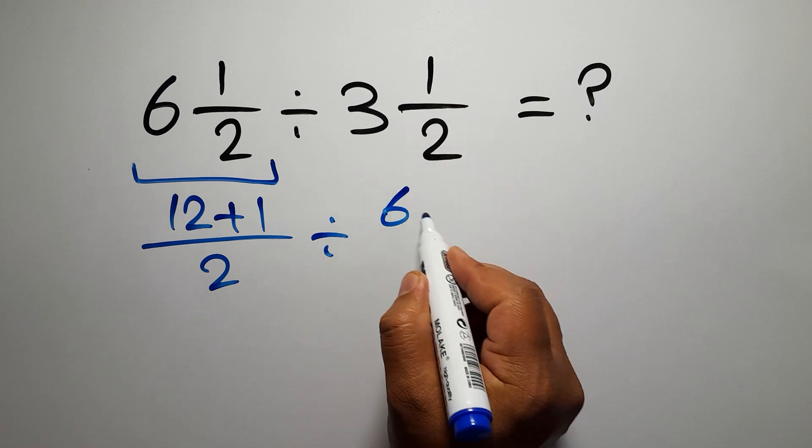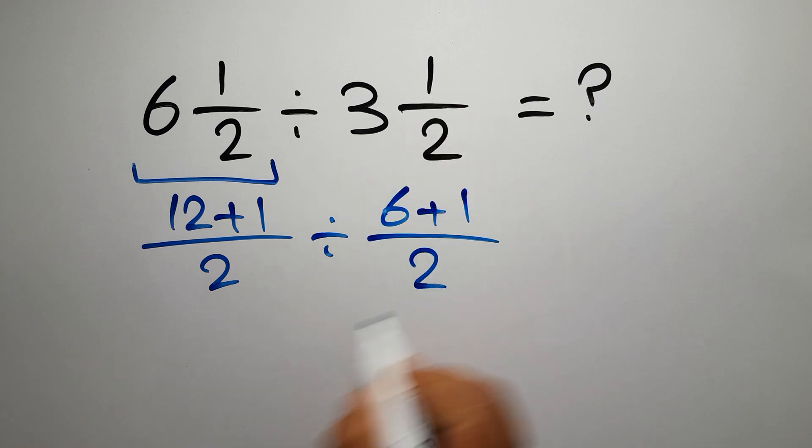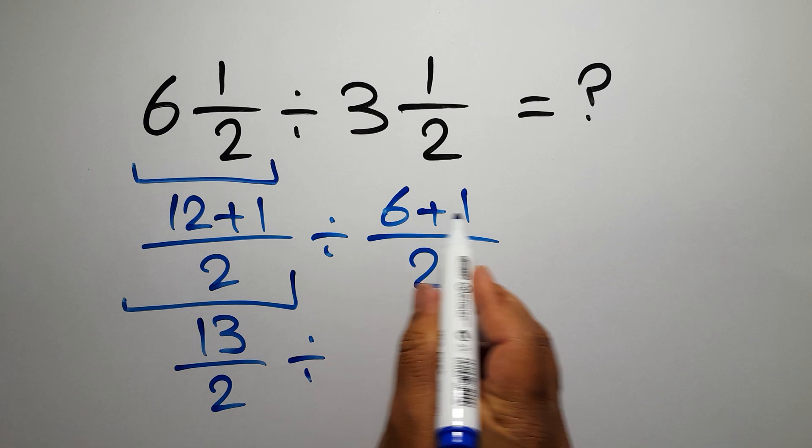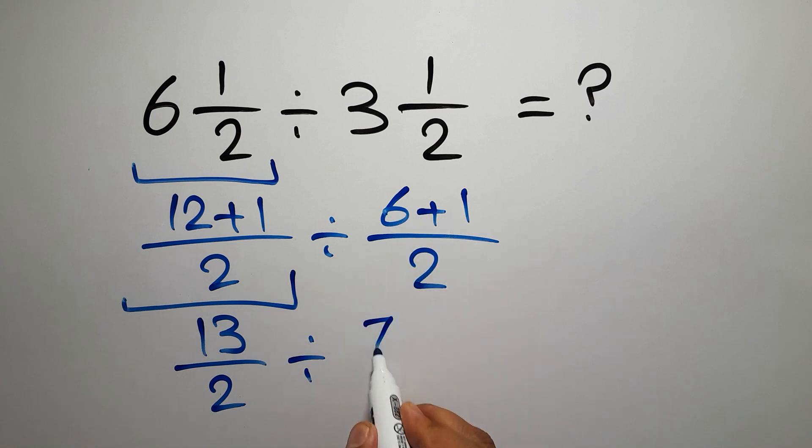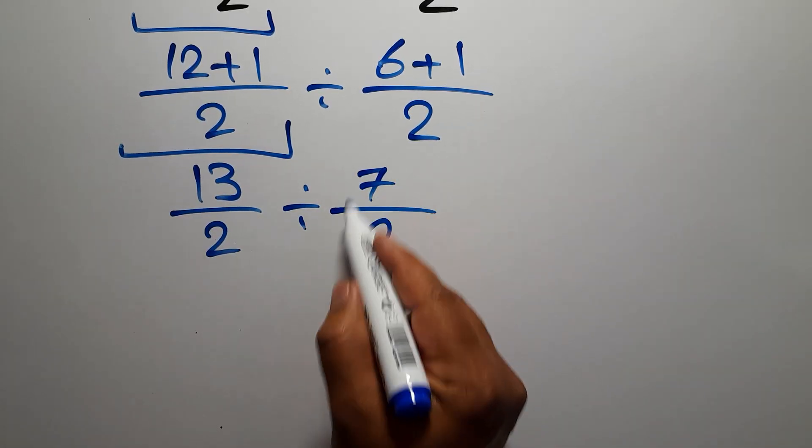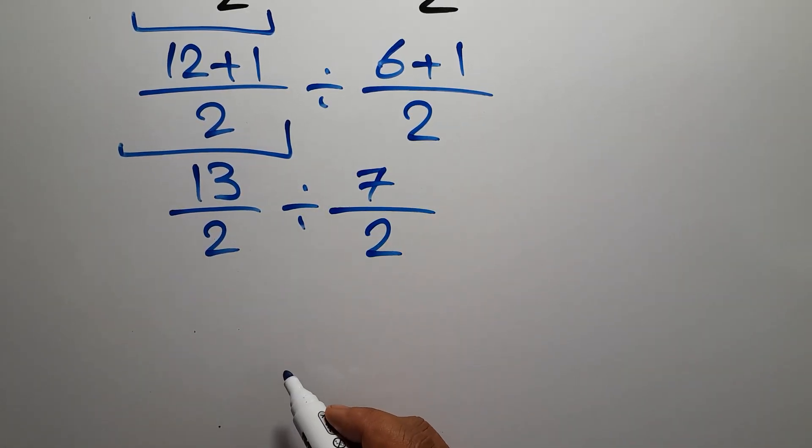Now, 12 plus 1 equals 13, so 13 over 2 divided by 6 plus 1 equals 7, and 7 over 2. Now this fraction divided by this fraction.